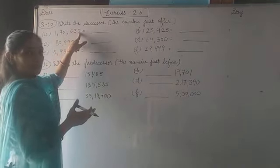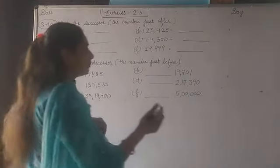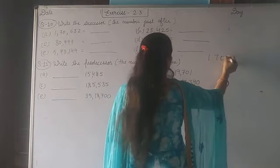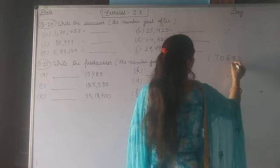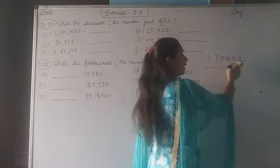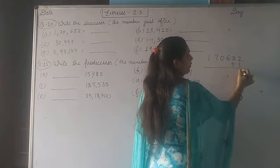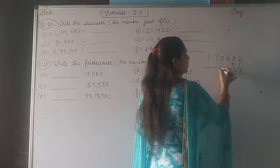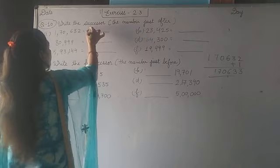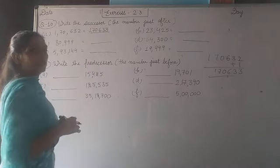Here the ones digit is given as 2. Add one to 2, what comes? 3. The first number given is one lakh seventy thousand six hundred thirty two. It means we add one in the ones place. Not here, where do we add one? In the ones place. So it is 2 plus 1 equals 3. Then 3 same, 6, 0, 7, 1. Then the number comes one lakh seventy thousand six hundred thirty three.